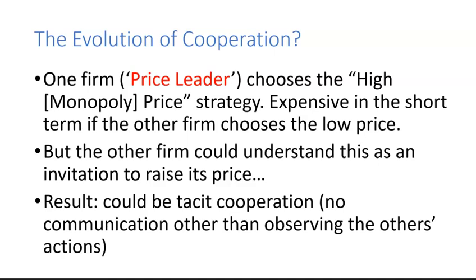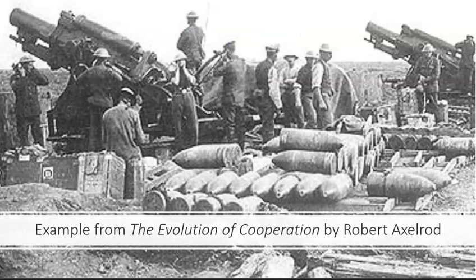Just to give you an example of how cooperation can evolve in seemingly unlikely circumstances: there's a very nice book by an American political scientist named Robert Axelrod, who in the 1980s wrote a book called The Evolution of Cooperation, where he looked at how cooperation can evolve in various settings. He has a whole chapter, which I found quite striking, on the evolution of cooperation in World War I.